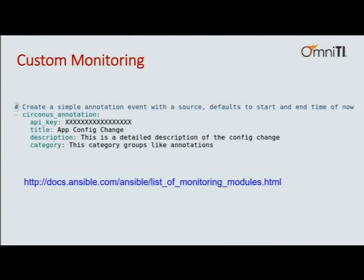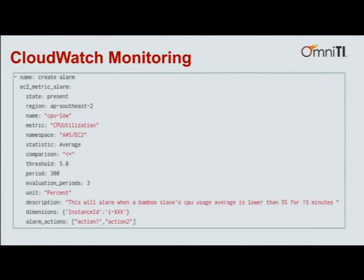Monitoring and alerts — if you go to the link I've provided, and your favorite monitoring tool is popular enough, it should already have a module in Ansible. Circonus is one monitoring tool I've used — this is an example of adding an API key. And because this is EC2 and many of you might want to use CloudWatch, CloudWatch does have an Ansible module. Here I'm creating an alarm, telling it the threshold to alert on, the unit of the value being collected, the description, and finally the alarm actions — go to PagerDuty, etc.